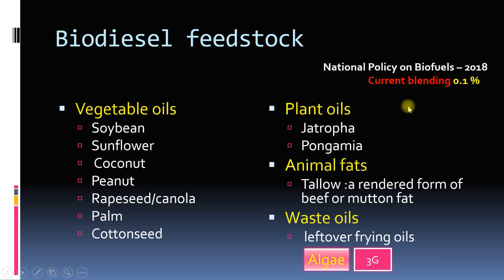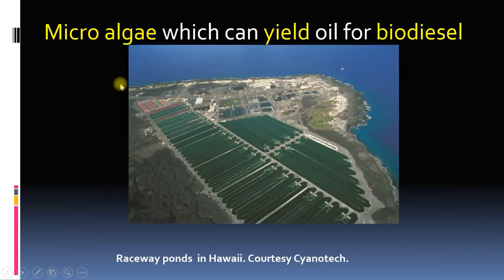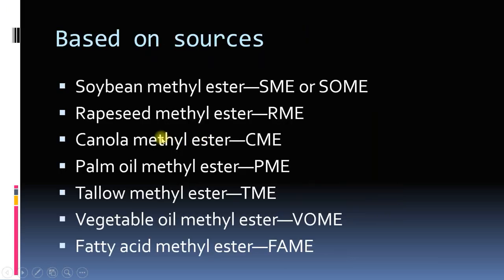Some pictures are shown here so you can see what jatropha, pongamia, soybean, rapeseed, canola, and oil palm look like. There is an interesting story: in Canada, the properties of rapeseed were improved and oil was produced from this improved variety — that is why the name 'canola' (Canadian oil) exists. Microalgae is grown in raceway ponds; not all algae can generate biodiesel, so a special variety must be selected. You can name the biodiesel based on its source — for example, soybean methyl ester if produced from soybean.